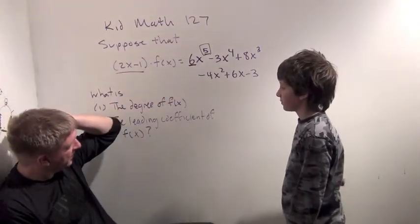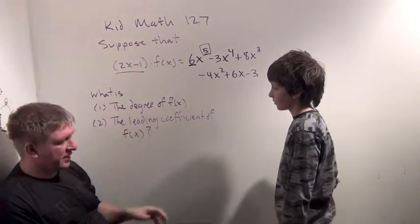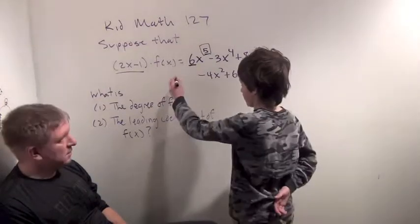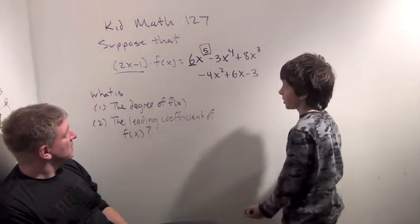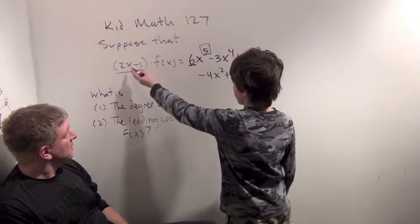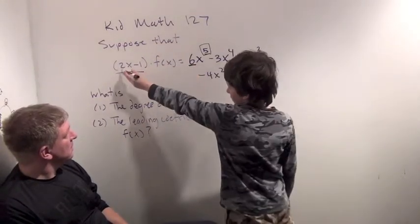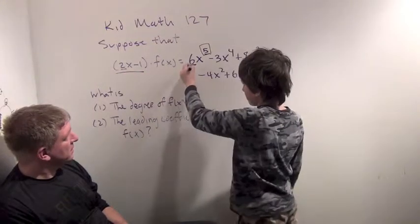The leading coefficient of this one is? 2. Okay. So what is the leading coefficient of f of x? I would think it would be 3. Because you have 3x to the 4th. Because you need to multiply this times this to get this stuff. And you already have a 2 here. You're going to need a 3 to get to a 6.